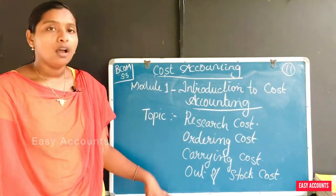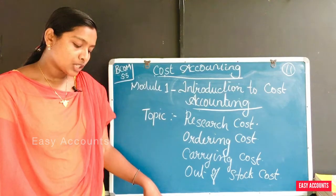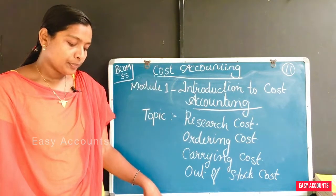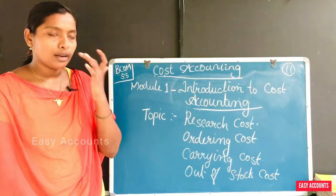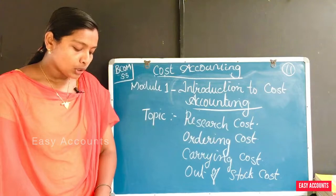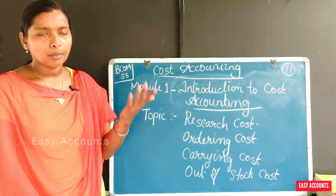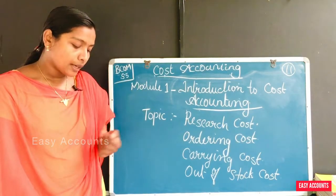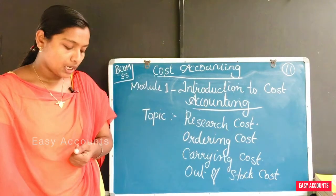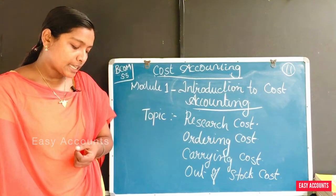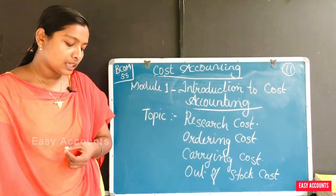The next thing is ordering costs. It is the cost incurred each time an order for the purchase of materials is placed. It is expressed as a rupee cost per order and includes the cost of getting an item into the firm's inventory.